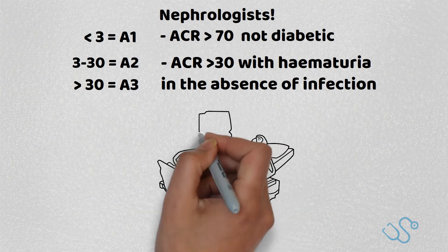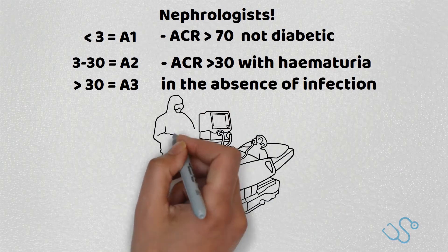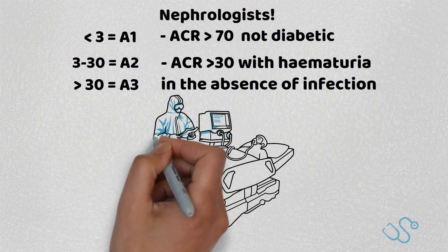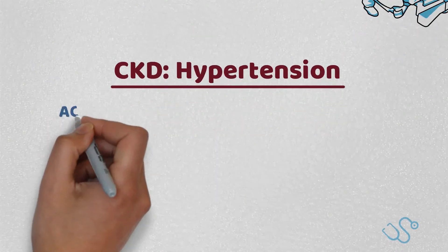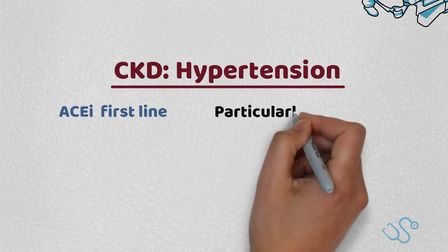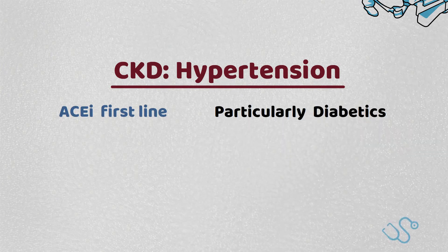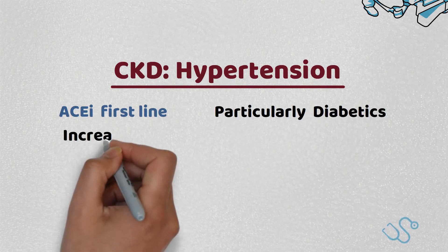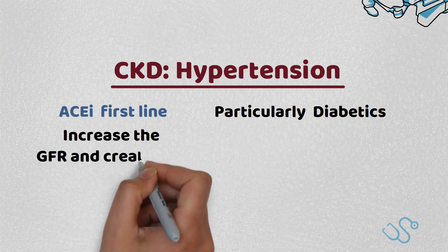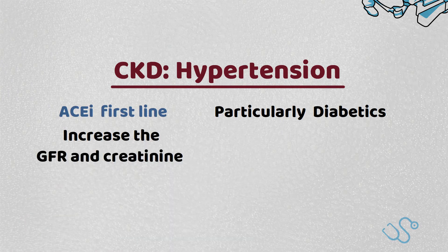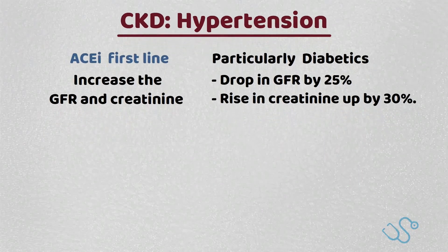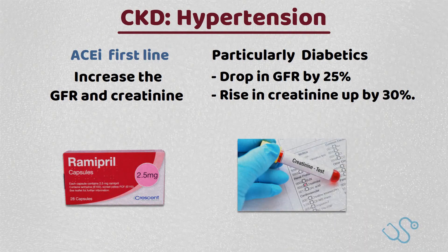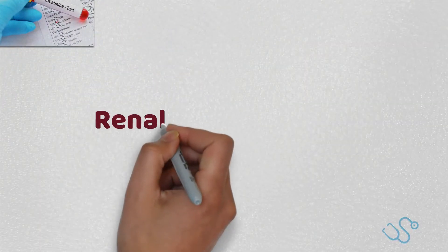Now that we've covered the aetiology and classification of CKD, let's look at some of the things we expect to manage as general practitioners — which are also common exam questions. First up: hypertension in CKD. ACE inhibitors are usually first line in CKD, particularly in diabetics, as they appear to be renal protective. They do however increase creatinine and reduce GFR, simply because they work by reducing the glomerular filtration pressure. We can expect and accept a drop in GFR by 25% and a rise in creatinine up to 30%.